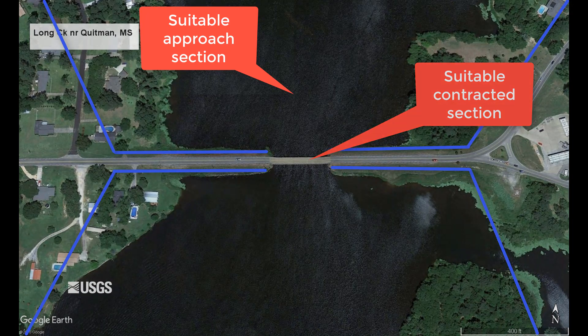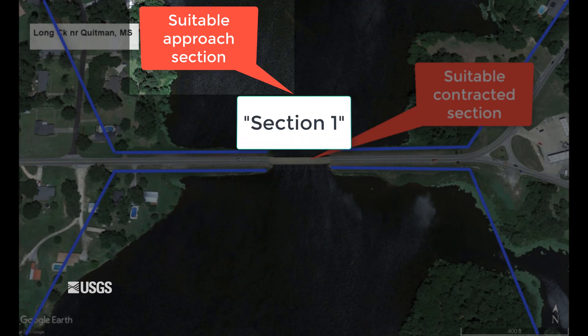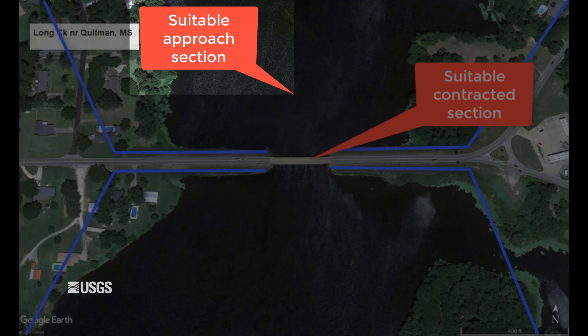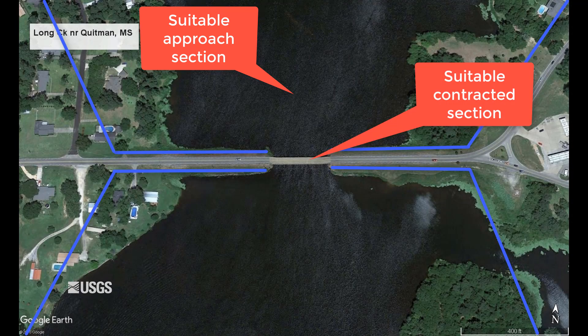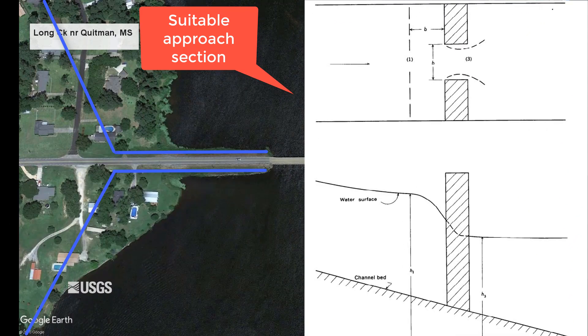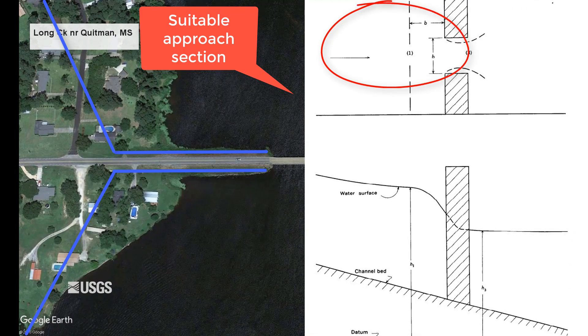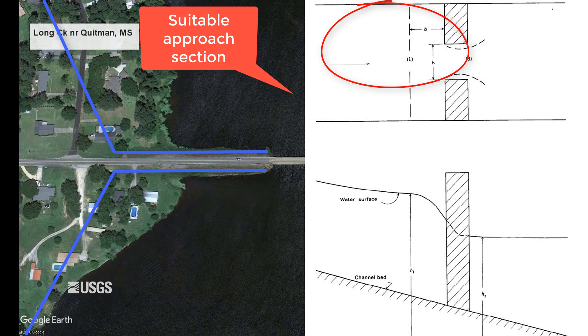Next, let's look at the approach section. The approach section, also known as section 1, is represented by a cross section of the natural, unconstricted channel upstream from the beginning of drawdown. The approach section is generally located one bridge width, denoted as B, upstream from the contraction section, and is important for determining characteristics such as whether there is subcritical flow as it approaches the contracted section.